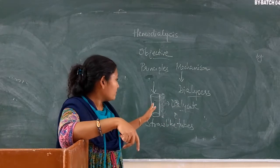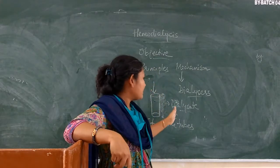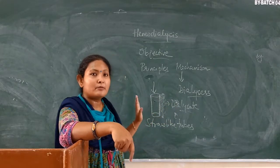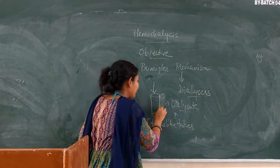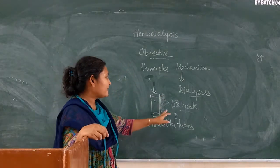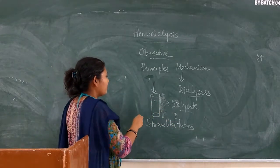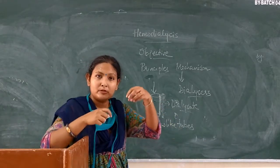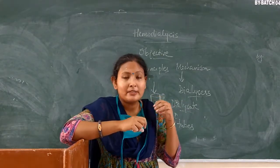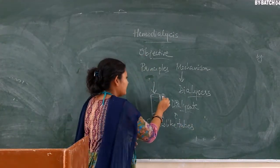Heavy metals, poisons, and drugs come out through this process. Excess water also comes out. However, large molecules cannot pass because of the semi-permeable membrane. The dialysate concentration is maintained such that excess toxins move into the dialysate fluid.